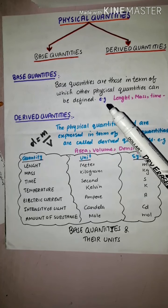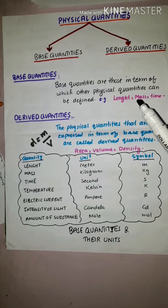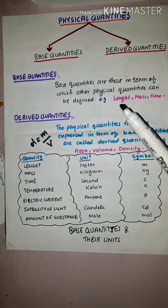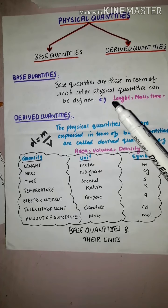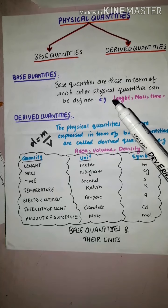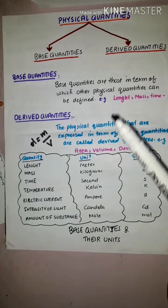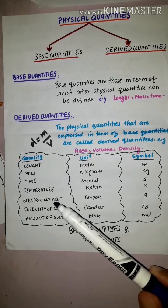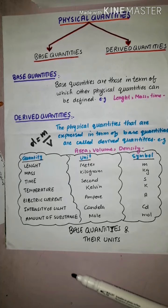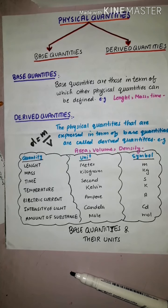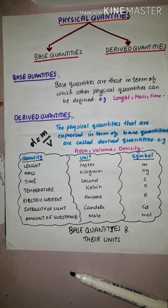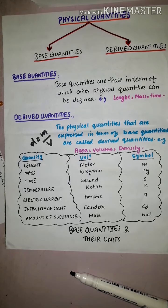Examples of base quantities are length, mass, time, and temperature. There are basically seven base quantities. Every quantity with whose help we define other physical quantities is called a base quantity. There are seven base quantities which are given in a table, and we will discuss that shortly.